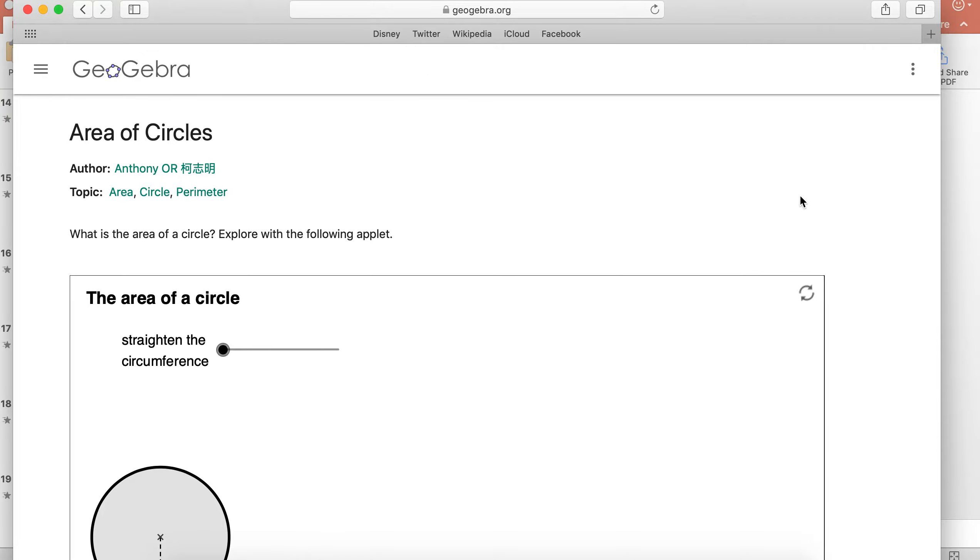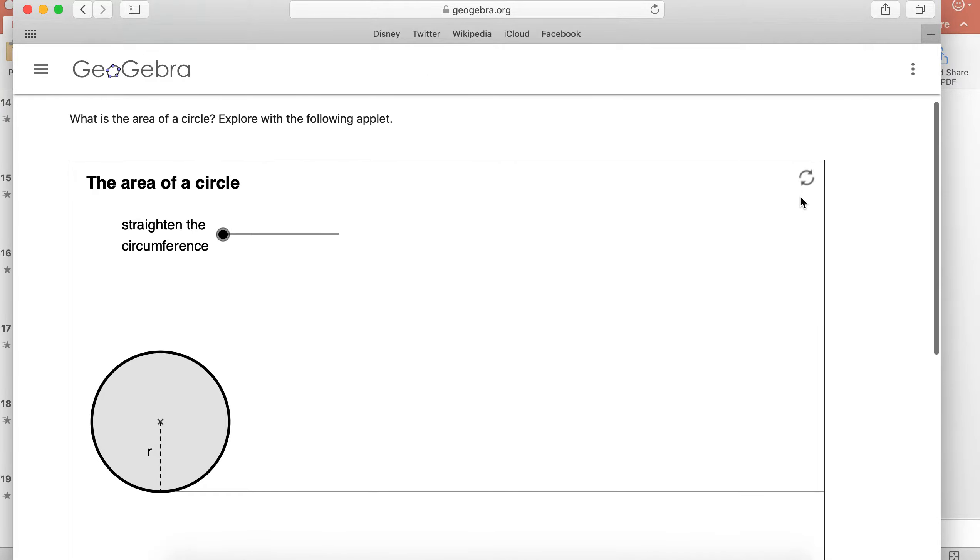The applet looks like this. It's on GeoGebra and it says, what's the area of a circle? Explore with the following applet. What we're going to do is straighten the circumference, meaning we're going to take the circumference of the circle and lie it out flat along the bottom. This is similar to if you have a bike tire with paint on it and you did one full revolution, that bike tire would do one circumference length when it painted.